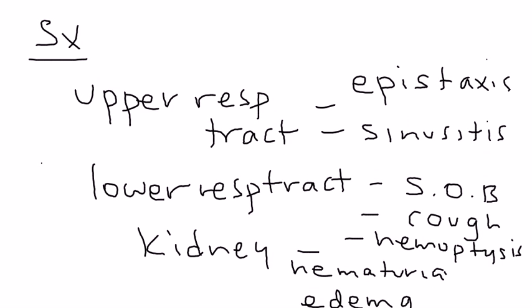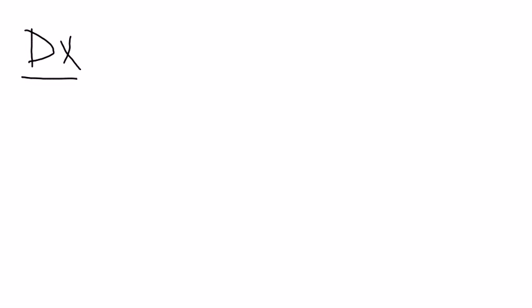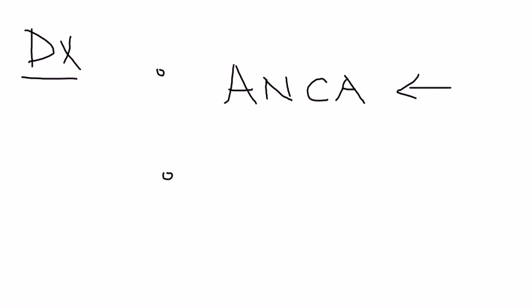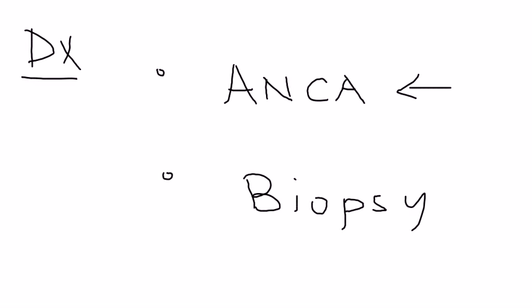Diagnosis is difficult — you're not going to think of Wegener's when somebody comes in with just a runny nose or cough. But if the nature is chronic, a specialist can measure ANCA levels. There are specific tests for this. There are different types of ANCA: cytoplasmic ANCA (C-ANCA) and perinuclear ANCA (P-ANCA). In Wegener's, we are specifically talking about C-ANCA.